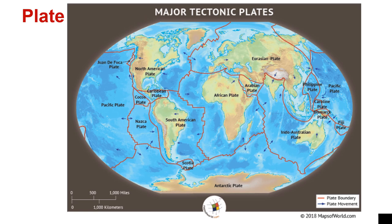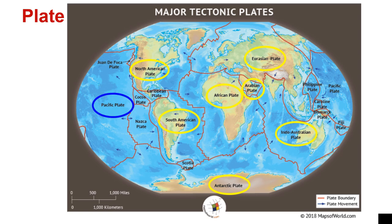Plate tectonics. Here is a picture of the world. The red lines represent the edges of the plates. There are many different kinds of plates: the North American plate, South American plate, the African plate, Arabian plate, Eurasian plate, Indo-Australian plate, and the Antarctic plate. You also have plates in the water: the Pacific plate, the Caribbean plate, the Nazca plate, and over on the far right is the Fiji plate. But it is the Juan de Fuca plate that plays an important part when it comes to Mount St. Helens.